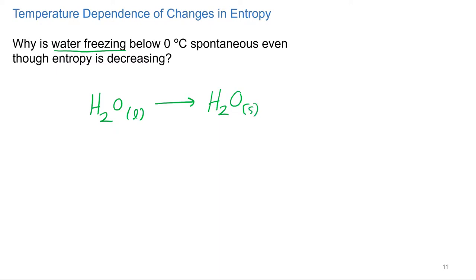The entropy is decreasing. It's going from liquid to solid. Solid to liquid was increasing entropy, so liquid to solid is decreasing. So our delta S would be negative — and it is negative.